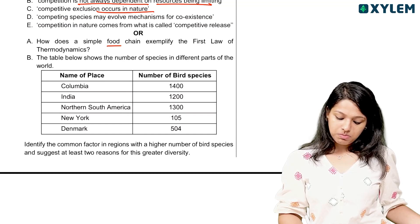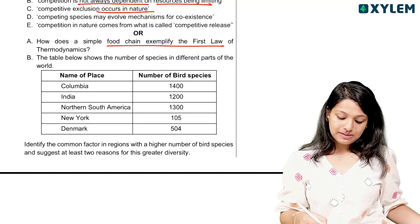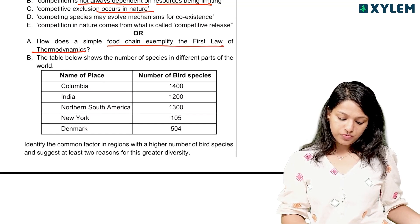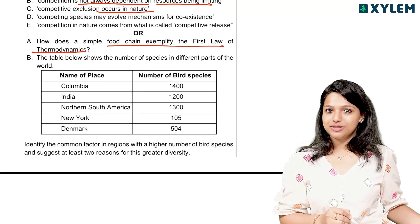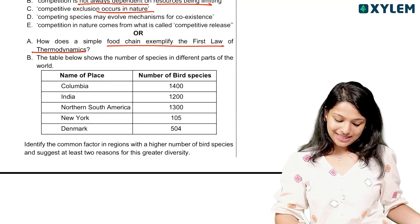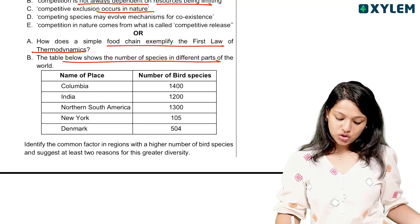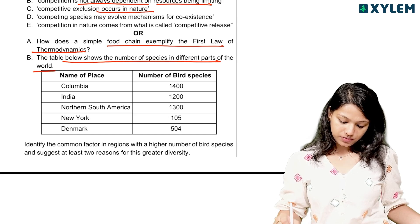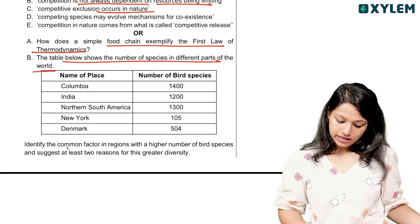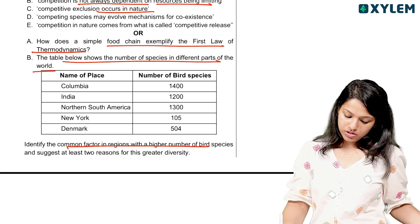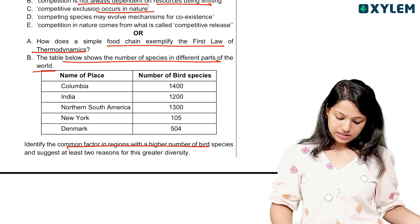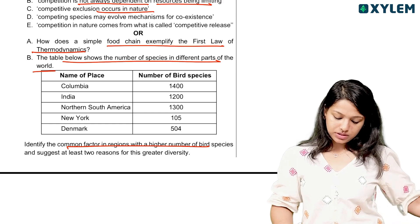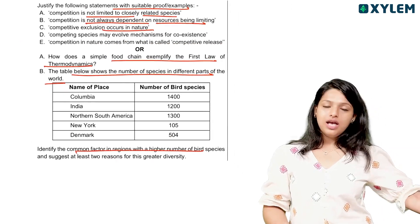One question asks: how does a simple food chain exemplify the first law of thermodynamics? Another question refers to a table showing the number of species in different parts of the world, asking you to identify the common factor in regions with a high number of bird species and give at least two reasons for this greater diversity.